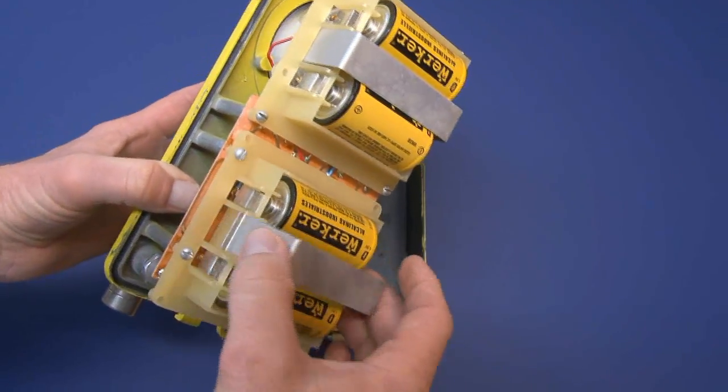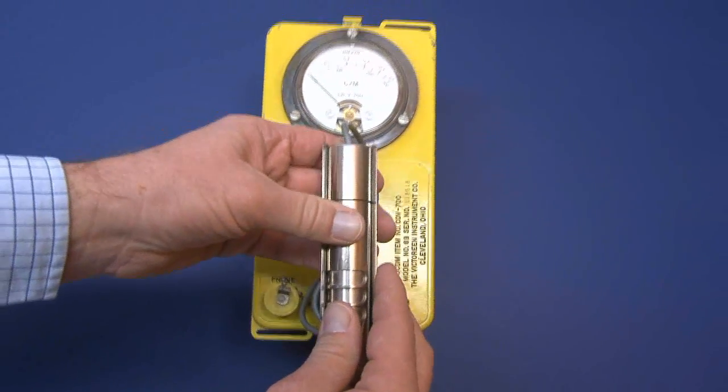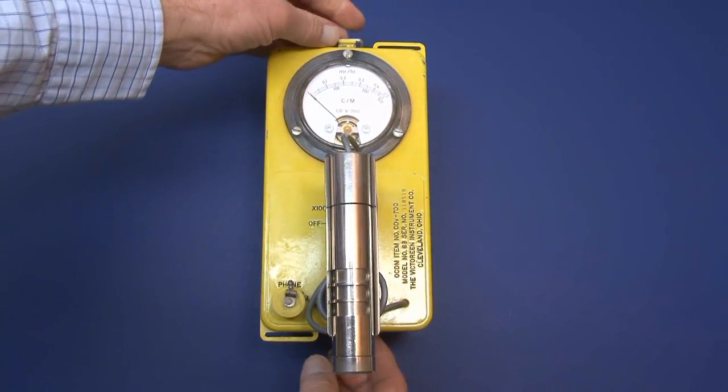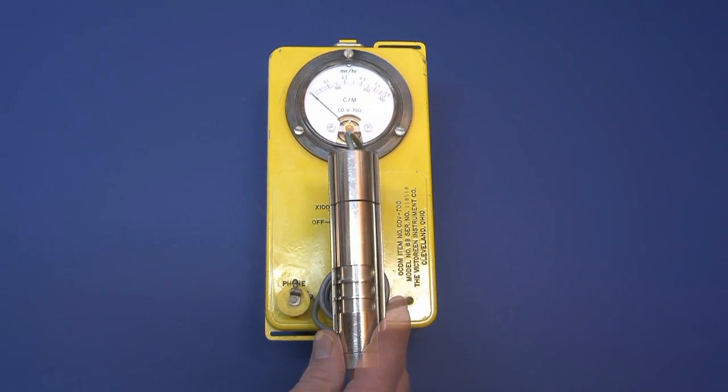You get your batteries put in, and then just squeeze those clips, put them back in, and those retaining clips should hold the batteries in place. We've just got some snaps here that allow you to close that instrument back up.